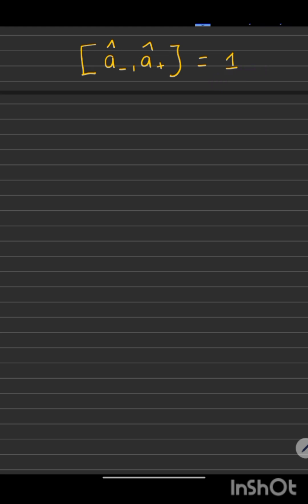If you factorize the Hamiltonian of harmonic oscillator, you will get the raising operator as this and lowering operator as this.